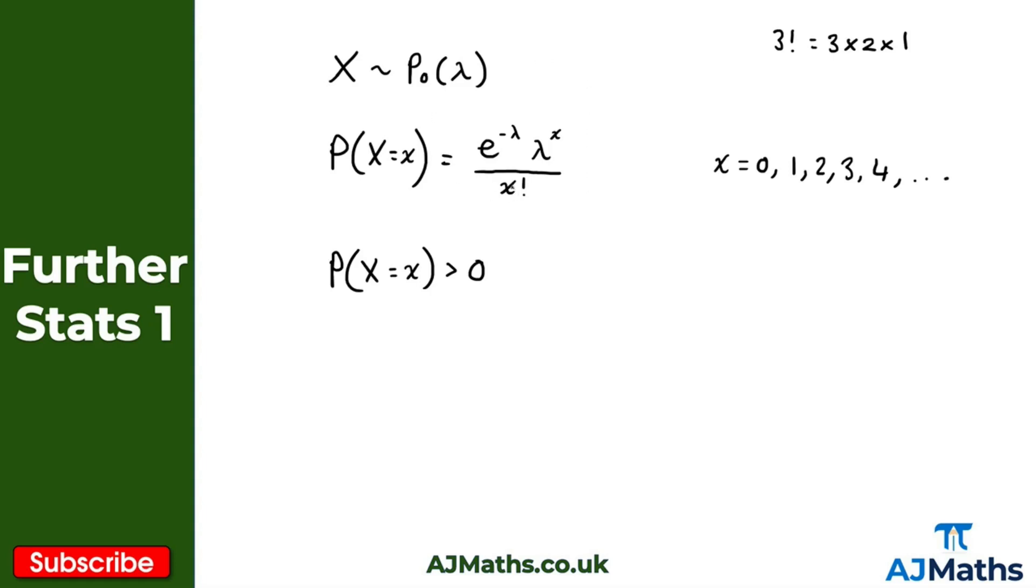So like I said, as x gets larger, then our probability will keep getting smaller and smaller. And again, just like we were saying here, the way we read this is x has or follows a Poisson distribution with parameter lambda.